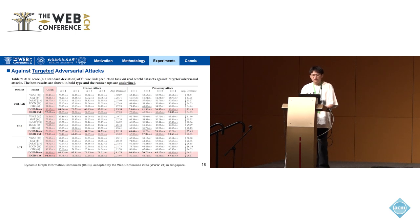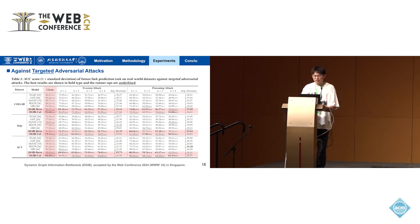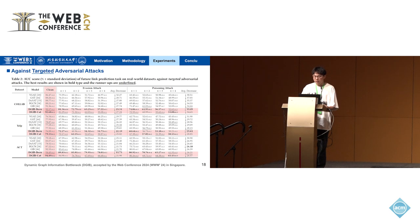We also compare DJIB against targeted adversarial attacks. We generated targeted datasets using NetAttack, a prevalent attacking platform. Considering different perturbation magnitudes N in both evasion attacking mode and poisoning attacking mode — where higher N means a heavier attacking degree — DJIB-Bern and DJIB-Cat outperform all baselines under different settings.